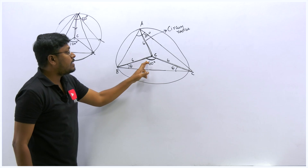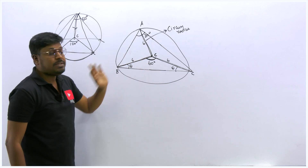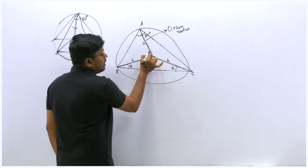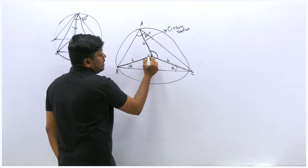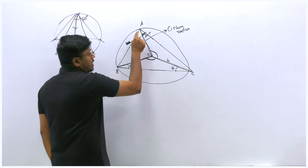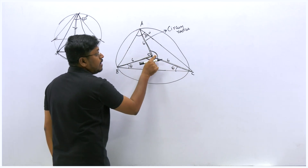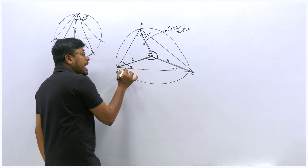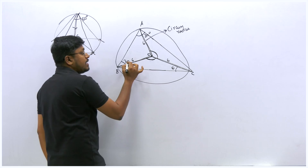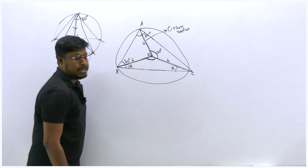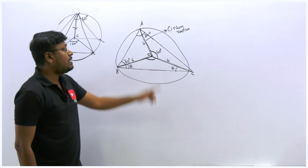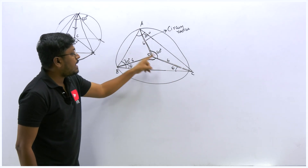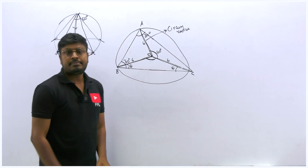So remember: if you need to find the circumcenter angle, the opposite angle doubled gives you the circumcenter angle. For example, if angle B is 30°, the circumcenter angle AOC is 60°. And the two base angles of the isosceles triangle formed are equal because the two sides (circumradii) are the same length.